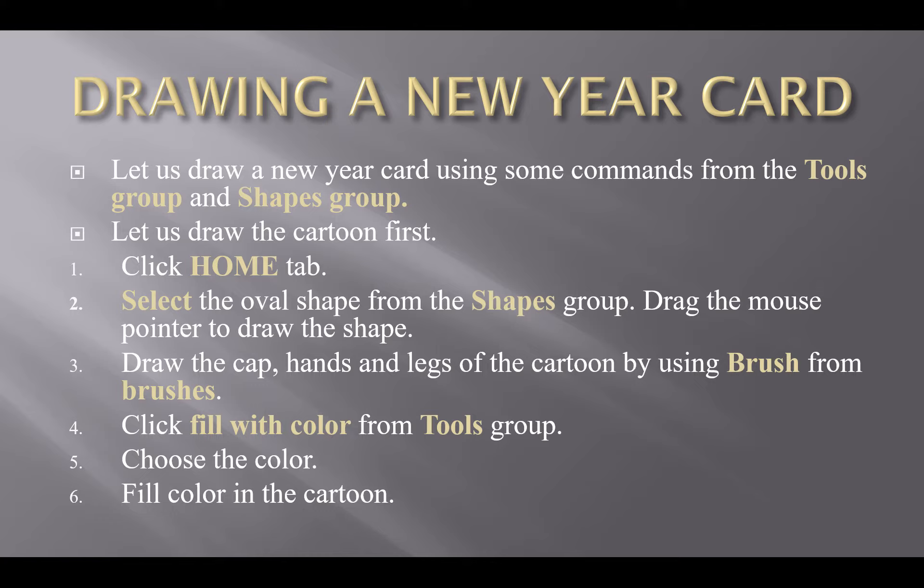Step number one: click the home tab. The home tab is at the top of your screen — you have to click it. Step two: select the oval shape from the shapes group, which is on the top of your screen. You have to select the oval shape with the help of the mouse.